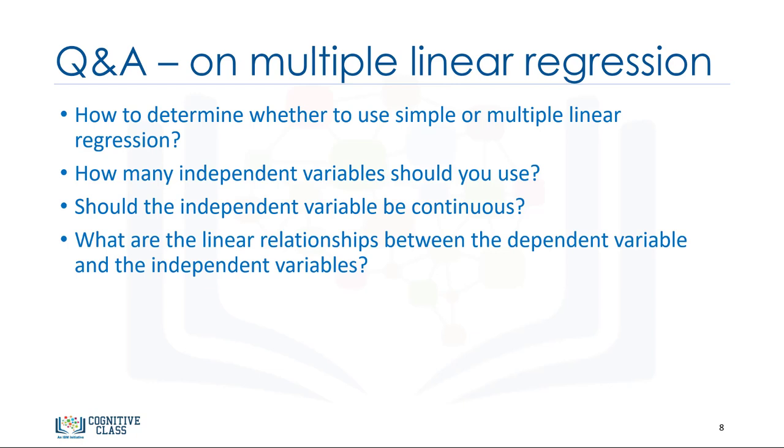As a last point, remember that multiple linear regression is a specific type of linear regression. So, there needs to be a linear relationship between the dependent variable and each of your independent variables. There are a number of ways to check for linear relationship. For example, you can use scatter plots and then visually check for linearity. If the relationship displayed in your scatter plot is not linear, then you need to use non-linear regression.